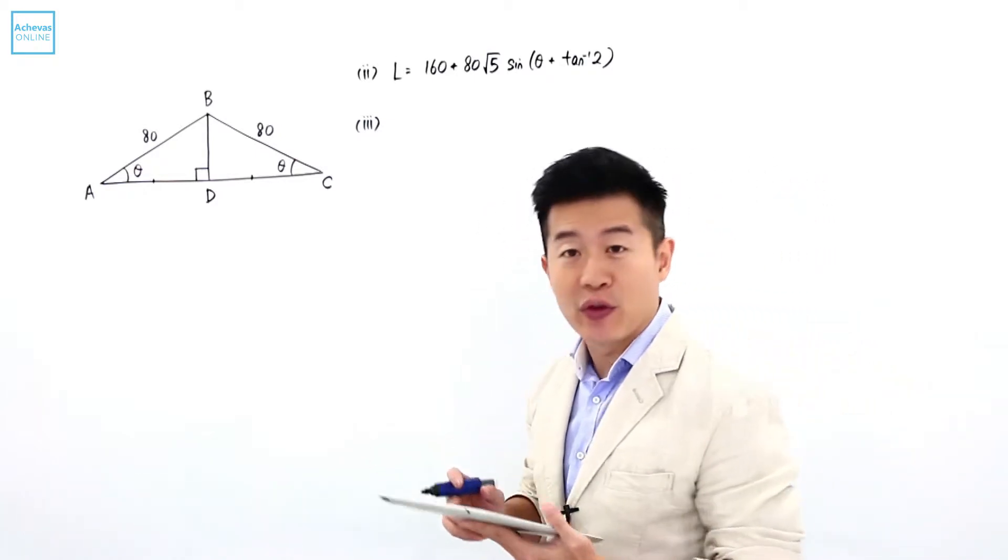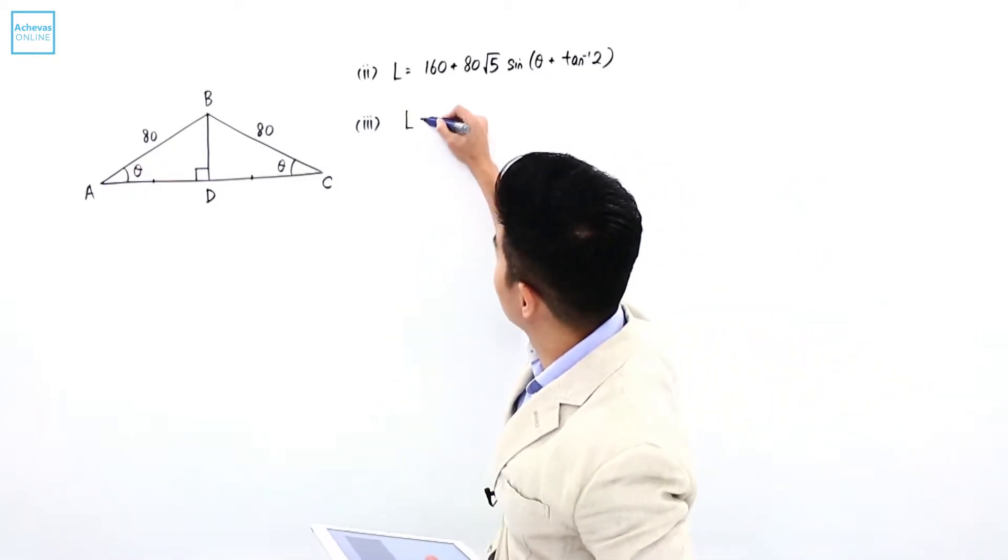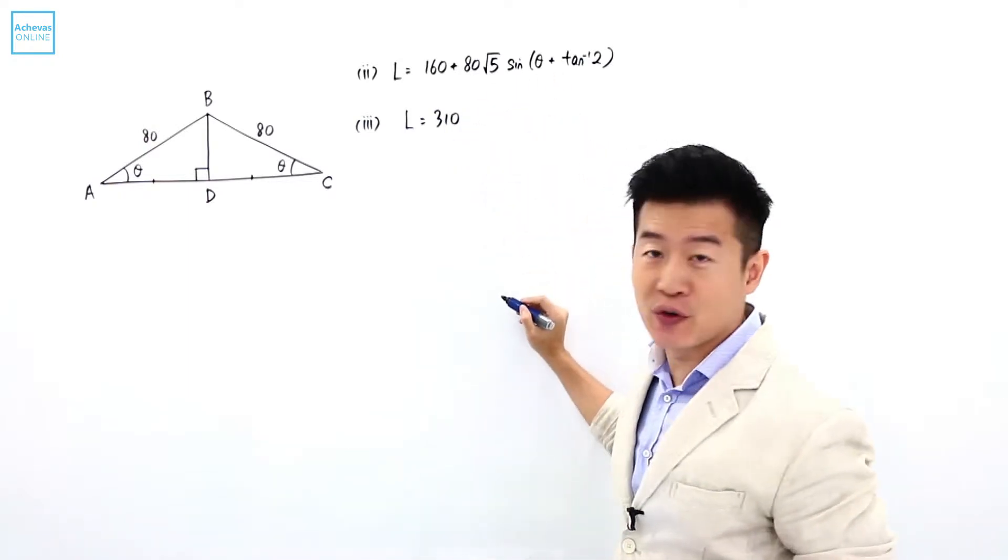And now we are given that L is equal to 310. So with this, I'm going to try to solve for theta.